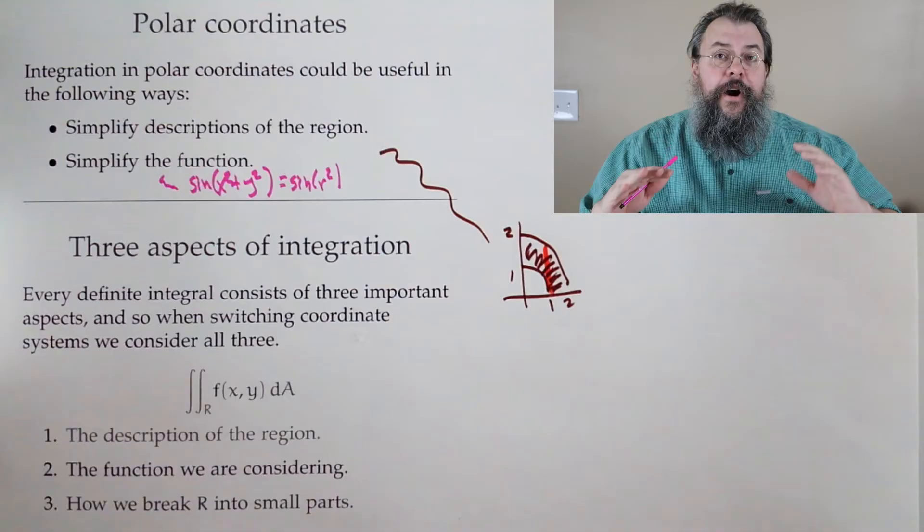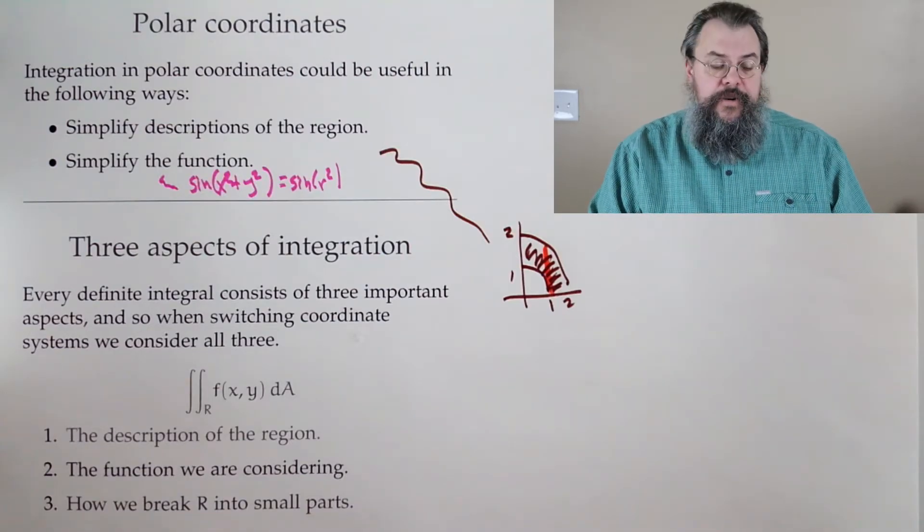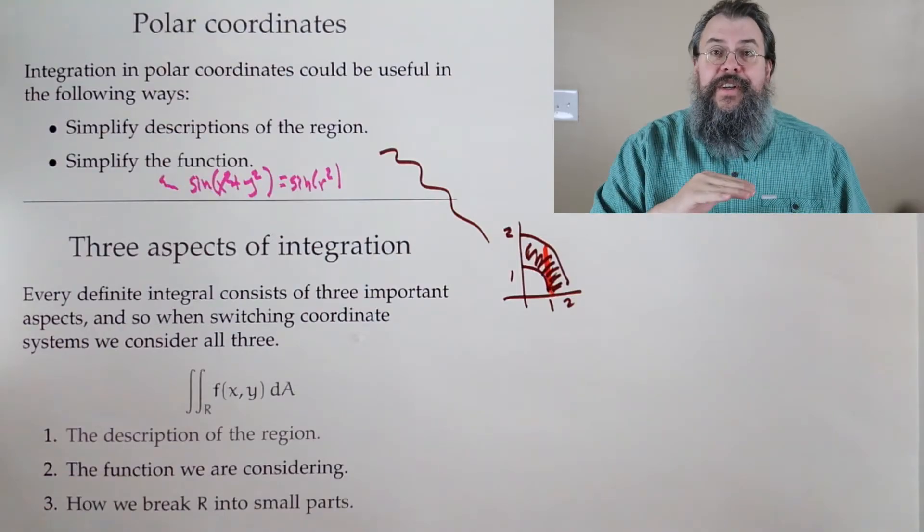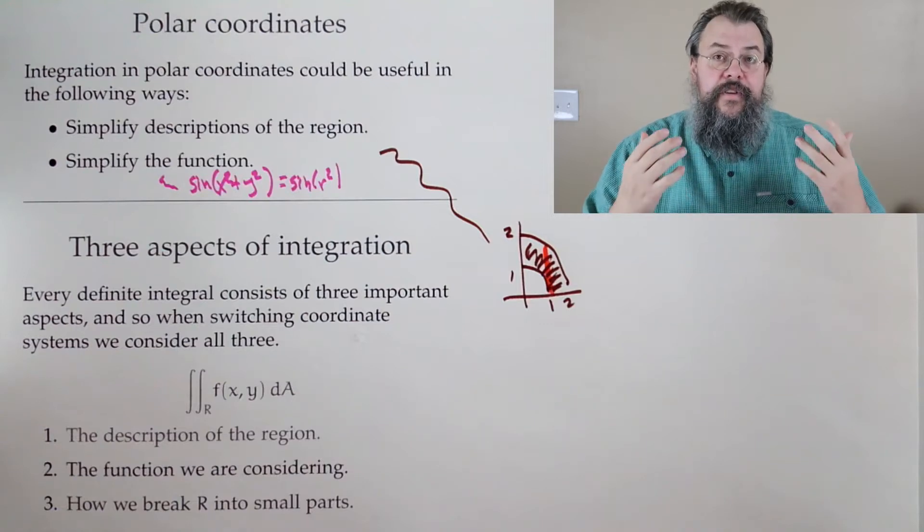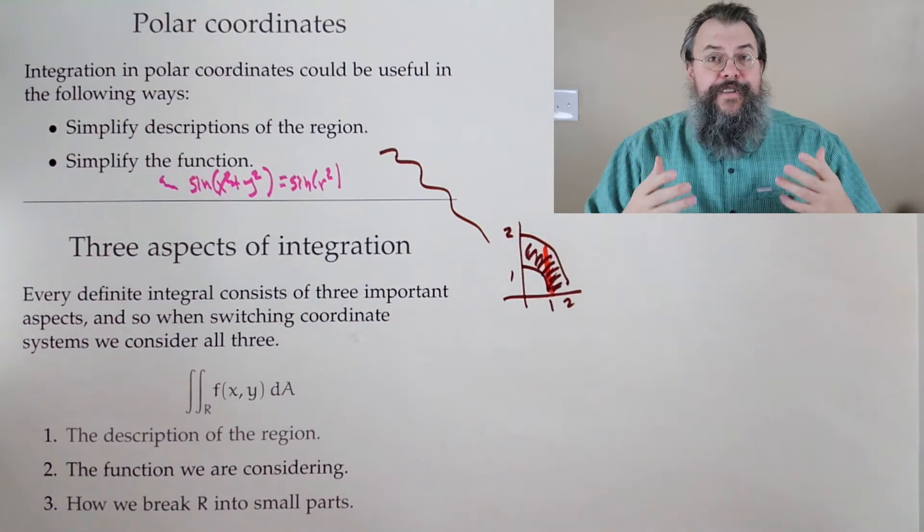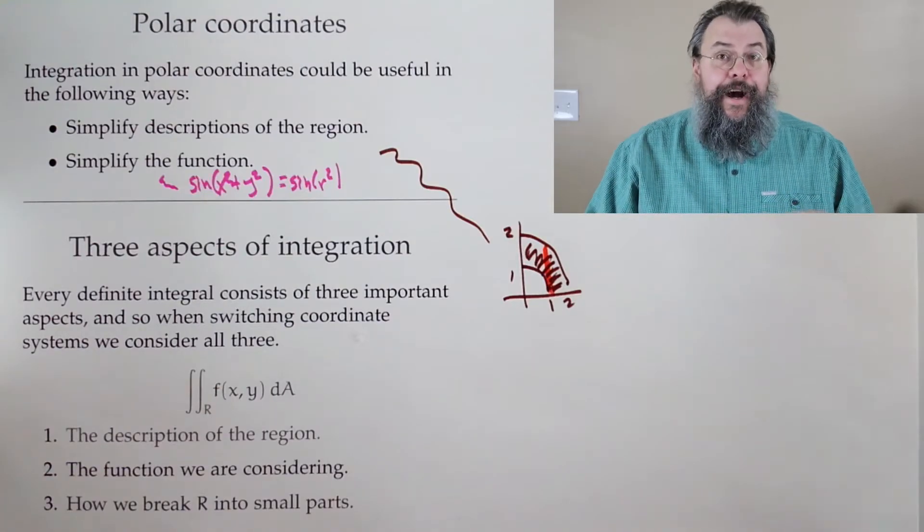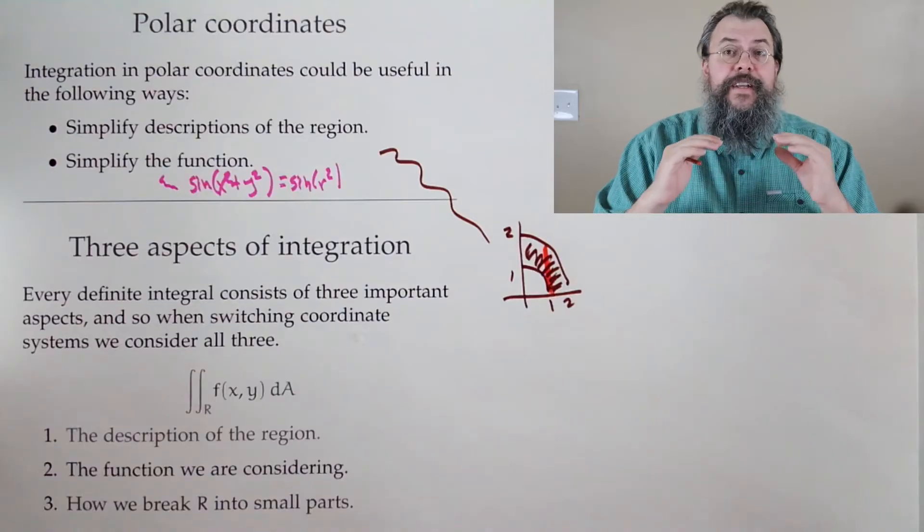All right. So there are good reasons why we might want to switch to polar. And of course, similar, there's reasons why we might have something in polar. We want to switch to Cartesian. The goal is trying to set our problems up in a way that helps us succeed. We want to succeed. It's a wonderful and admirable goal to set out and say, hey, I want to succeed.